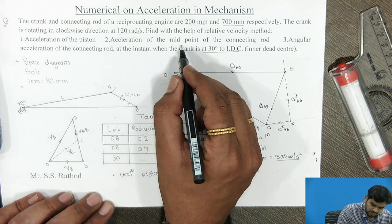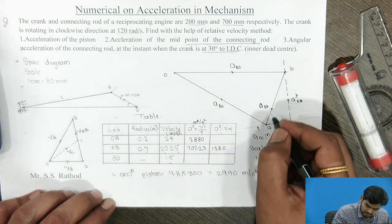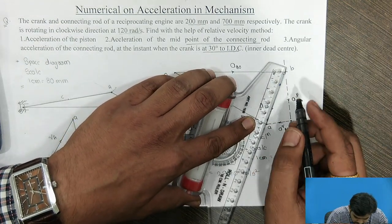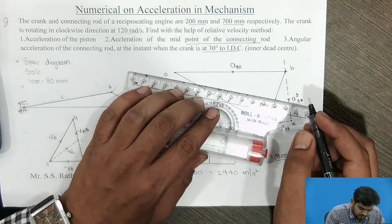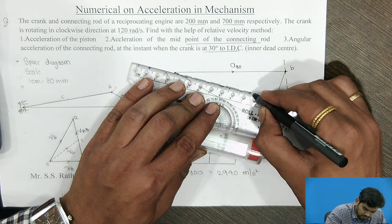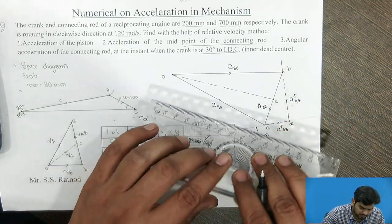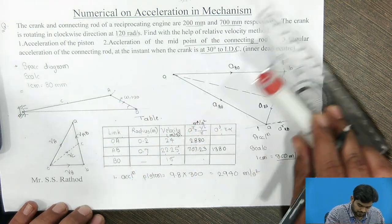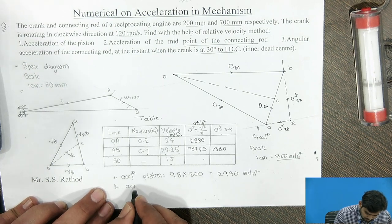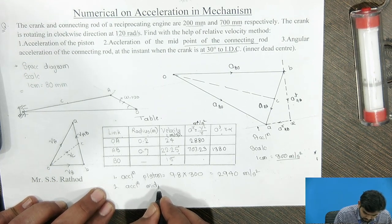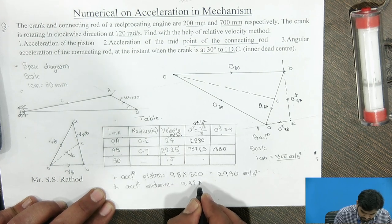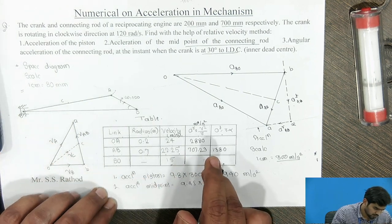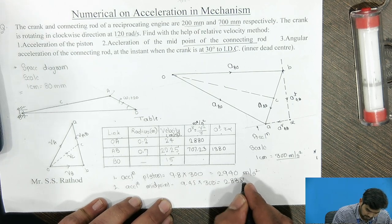Next question: find out the acceleration of the midpoint of the connecting rod AB. For the total acceleration, we take the midpoint C of AB in the acceleration diagram. Measuring the length to point C, it comes to 9.45 cm. So 9.45 multiplied by 300 gives 2835 m/s².